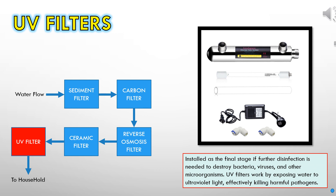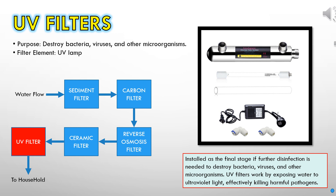UV Filters: This filtration stage is dedicated to the eradication of harmful bacteria, viruses, and other microorganisms present in the water, ensuring its safety for consumption. The primary filter element utilized is a UV lamp, renowned for its ability to effectively destroy a wide range of pathogens. Housed within a glass or quartz tube, this UV lamp emits ultraviolet light, which penetrates the cells of microorganisms.